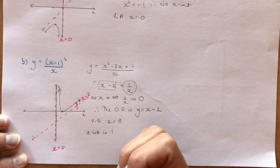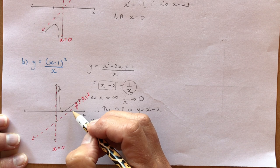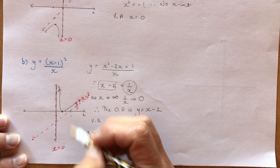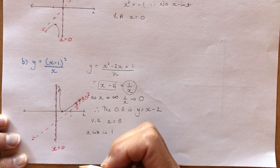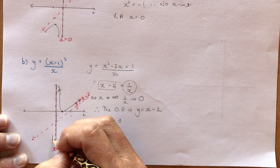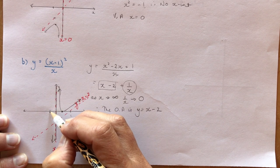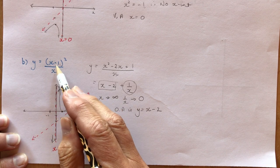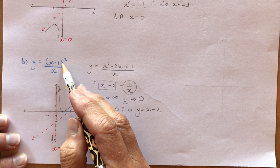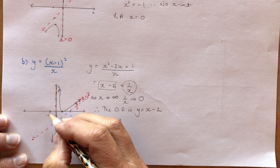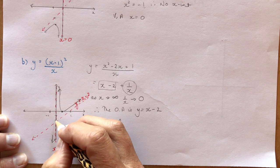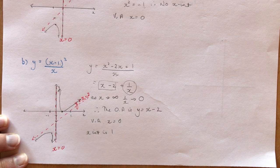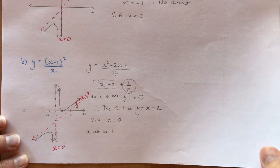To find more detail: try x = -1. We get (-1 - 1)² / (-1) = 4 / (-1) = -4, so the point (-1, -4) is on the graph. The graph approaches the oblique asymptote from above on the right and goes down through that region on the left side of the vertical asymptote.